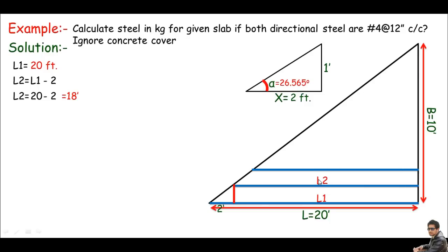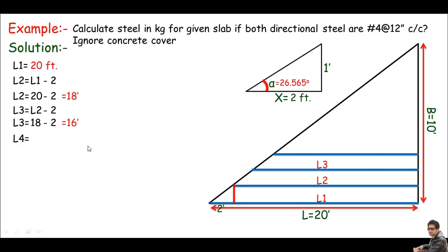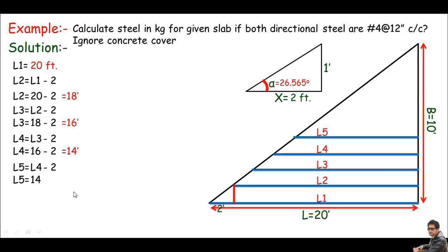The length of bar 2 is 18 feet. For L3, we subtract 2 from L2: L3 = 18 − 2 = 16 feet. For L4: L4 = L3 − 2 = 16 − 2 = 14 feet. For L5: L5 = L4 − 2 = 14 − 2 = 12 feet. We simply subtract 2 feet from each bar to get the next bar length.